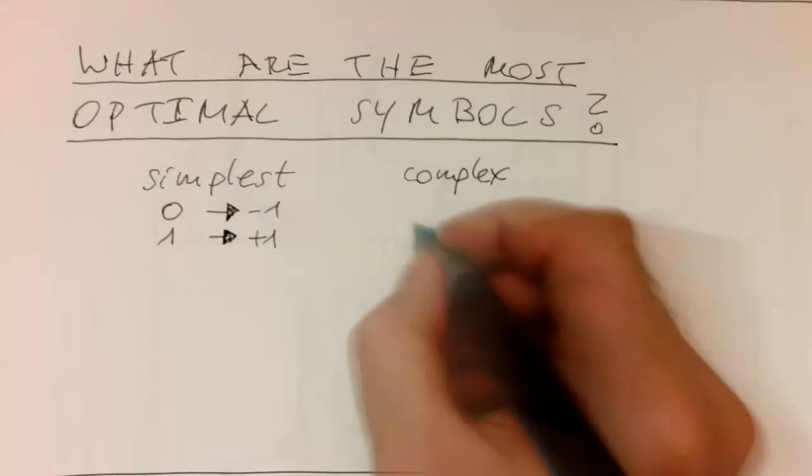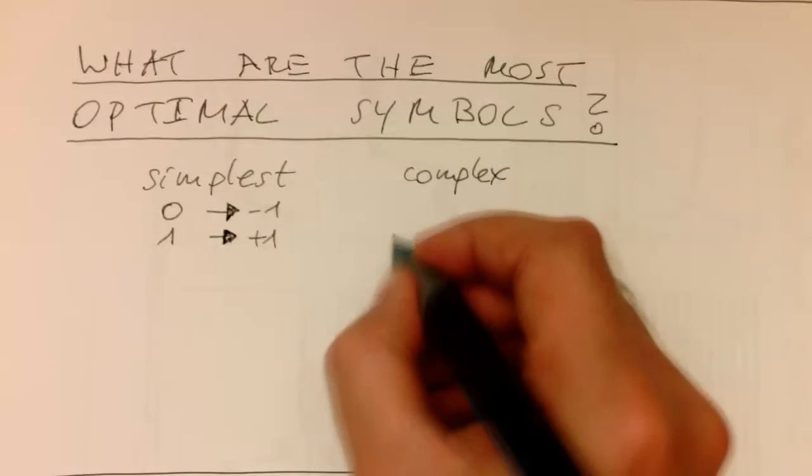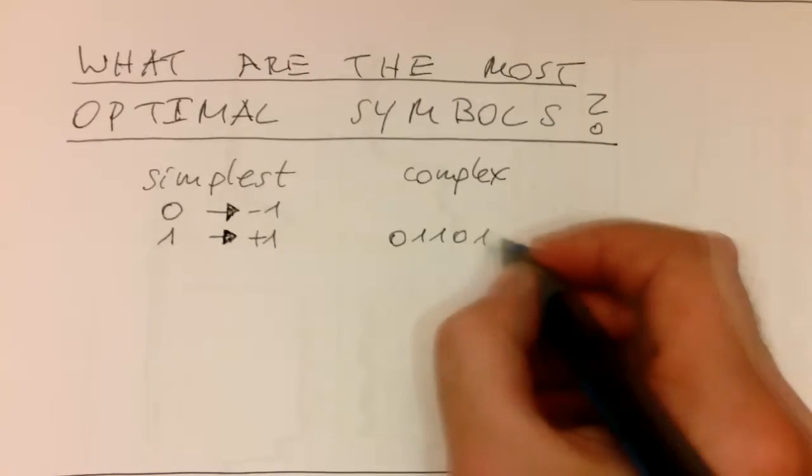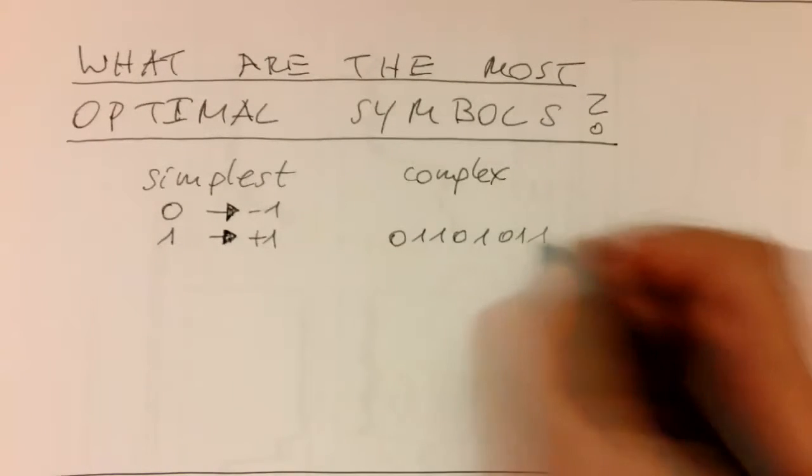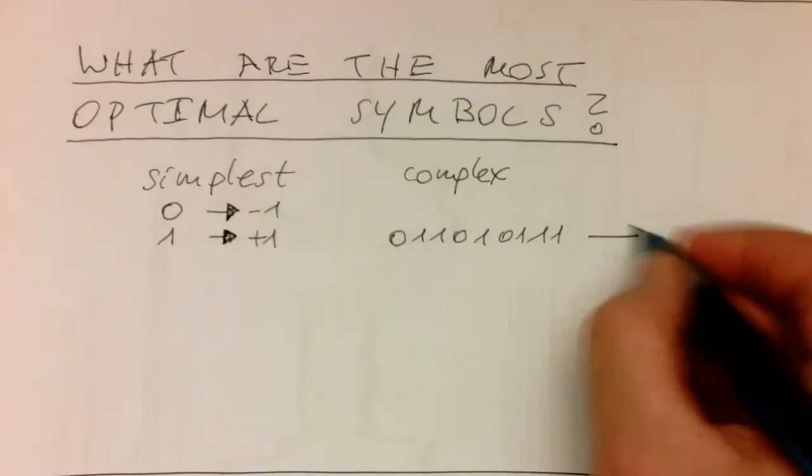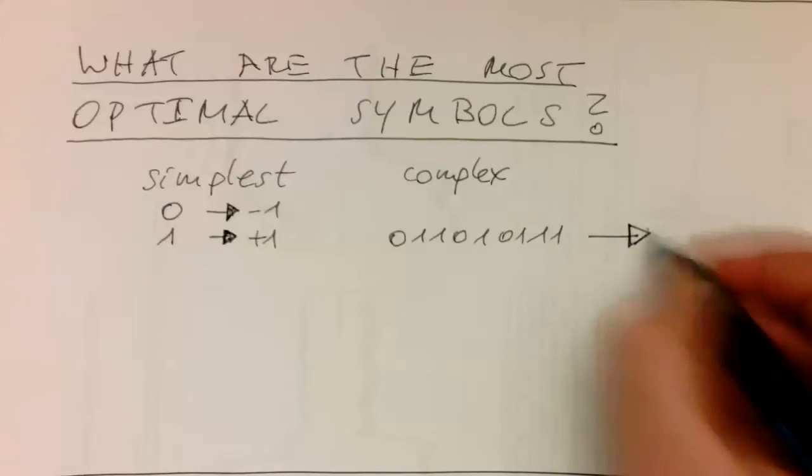And then a very complex solution is that we are taking a very large chunk of numbers and turning this into a quite complex time domain symbol.